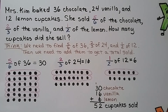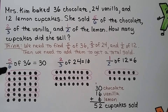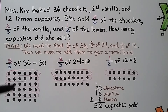Mrs. Kim baked thirty-six chocolate, twenty-four vanilla, and twelve lemon cupcakes. She sold five-sixths of the chocolate, two-thirds of the vanilla, and one-half of the lemon. How many cupcakes did she sell? We need to find five-sixths of thirty-six, two-thirds of twenty-four, and one-half of twelve, then add them. For five-sixths of thirty-six, the denominator is six so we make six groups and circle five of them. There are thirty counters in those five groups. Five-sixths of thirty-six is thirty.